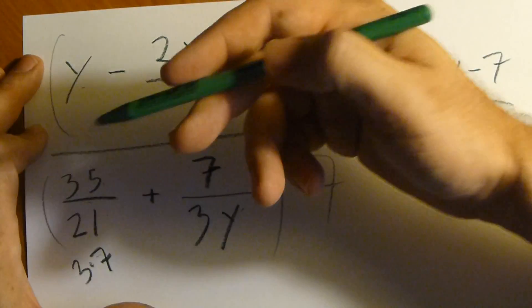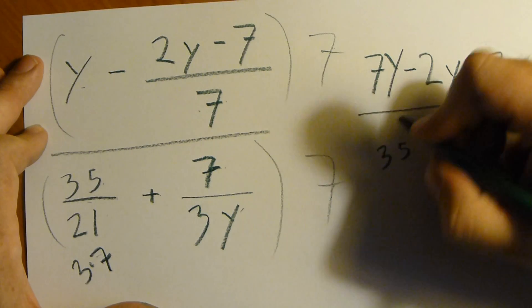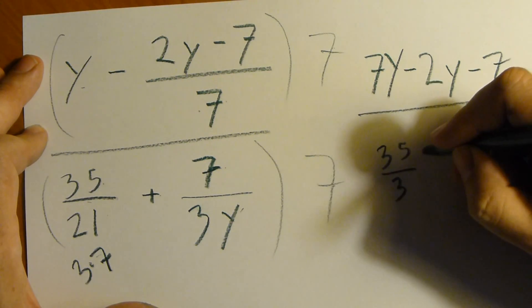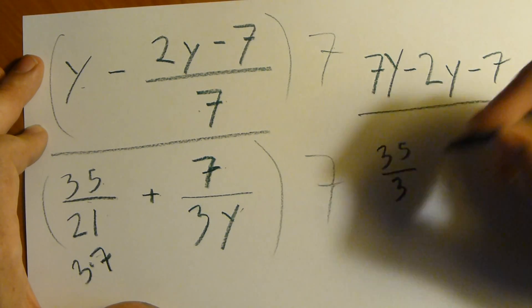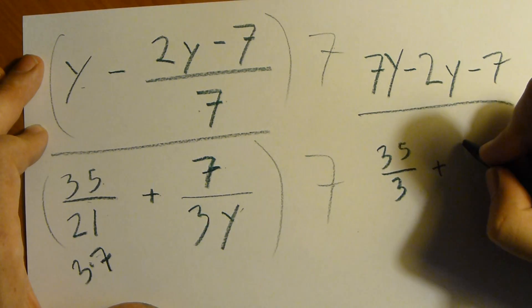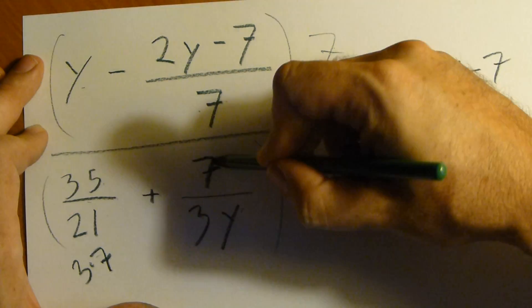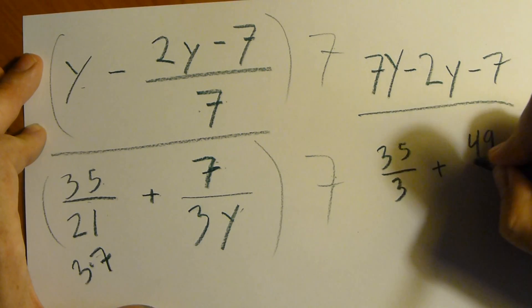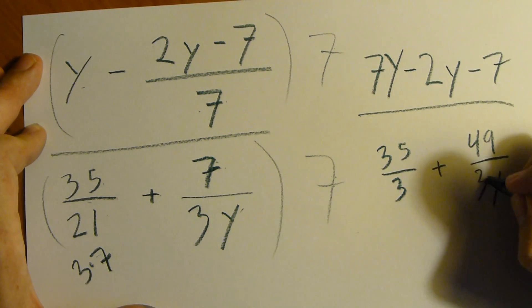It cancels out. So we have 35 over 3. Remember we had 7 here and 7 here, so it cancels out. Plus 7 times 7, 7 on top, 7 on top. We have 7 squared, that's 49, over 3y.